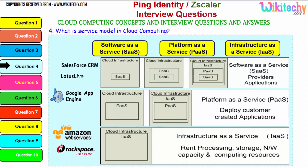For Software as a Service, the cloud provides the infrastructure, operating system, and software — you only manage application settings. For Platform as a Service, the operating system is provided on the server and you can put any application or software you want. For Infrastructure as a Service, the server is provided and you choose the OS, applications, and make all configurations. Examples for SaaS include Lotus Live and Salesforce CRM; for PaaS, Windows Azure and Google App Engine; for IaaS, Amazon Web Services and Rackspace Hosting.